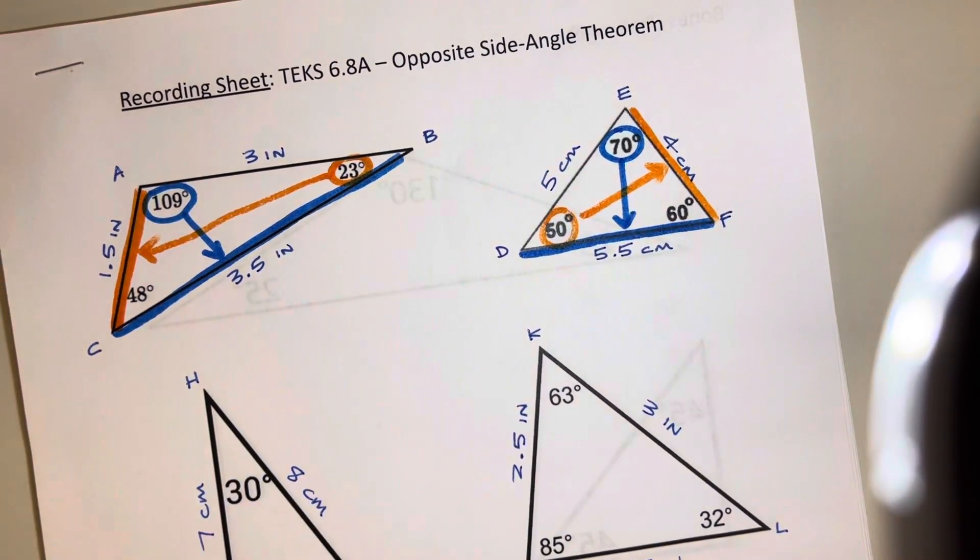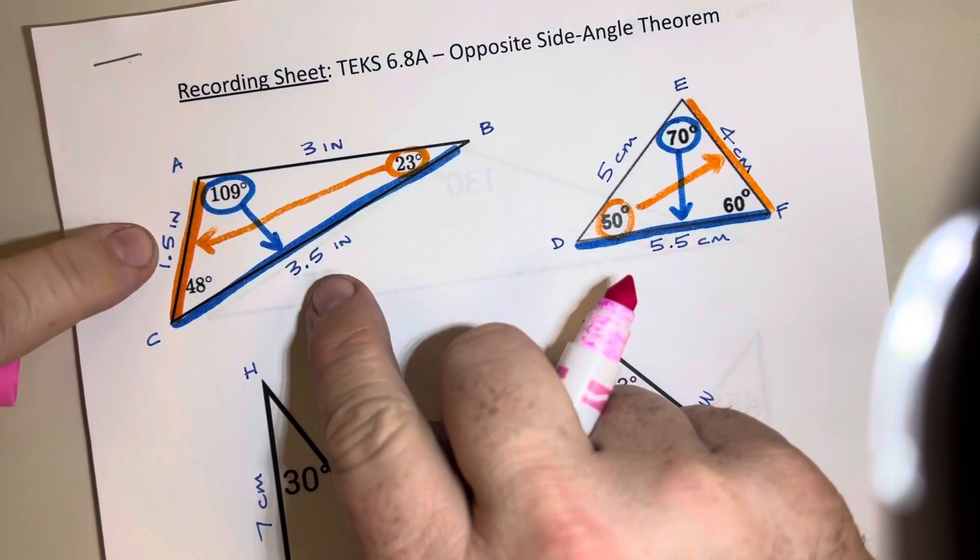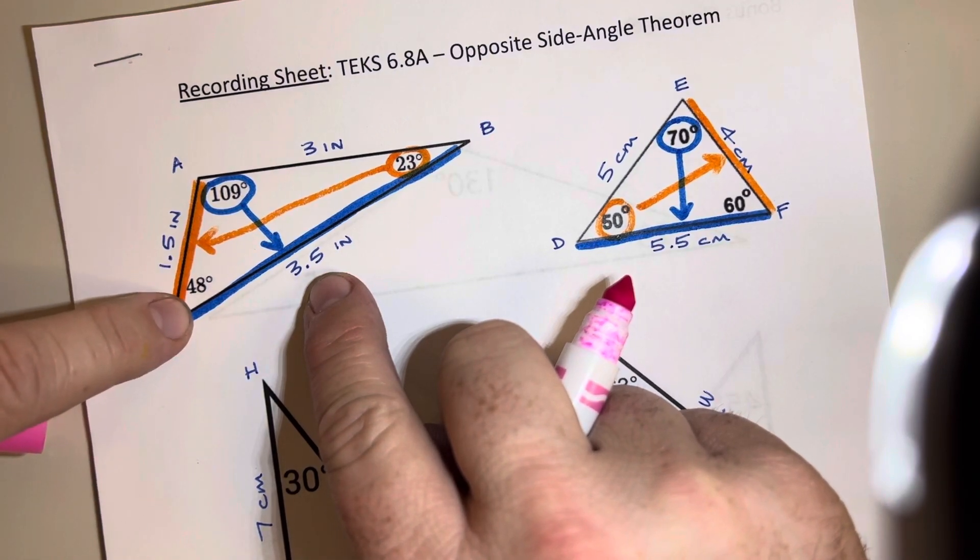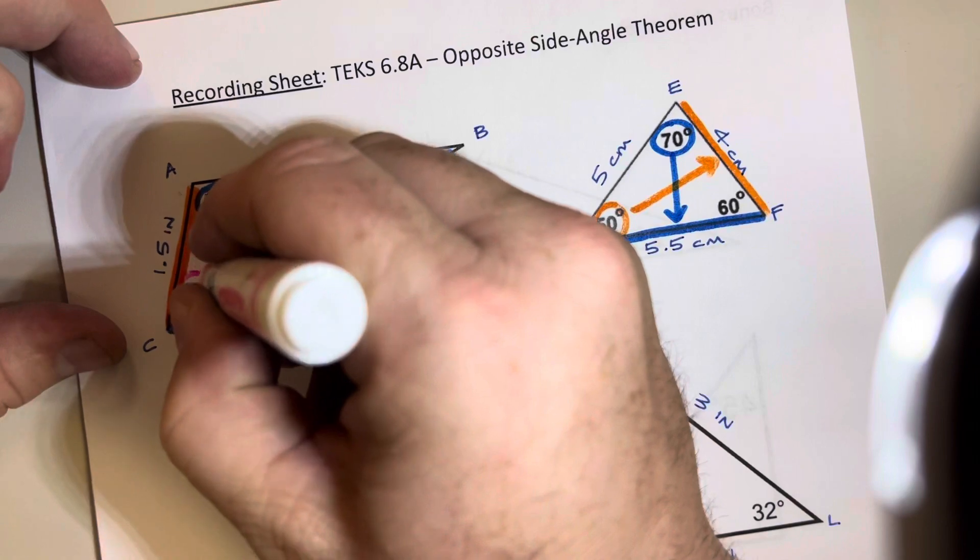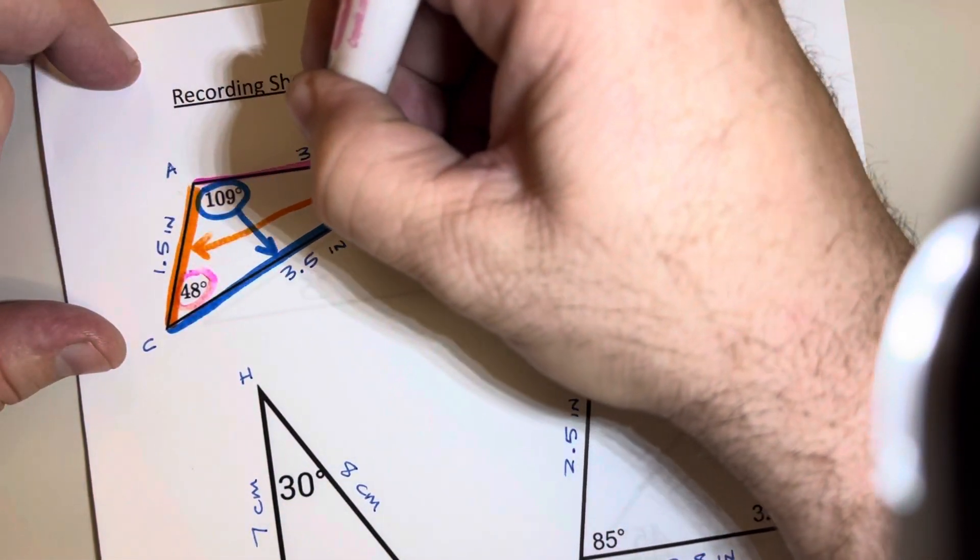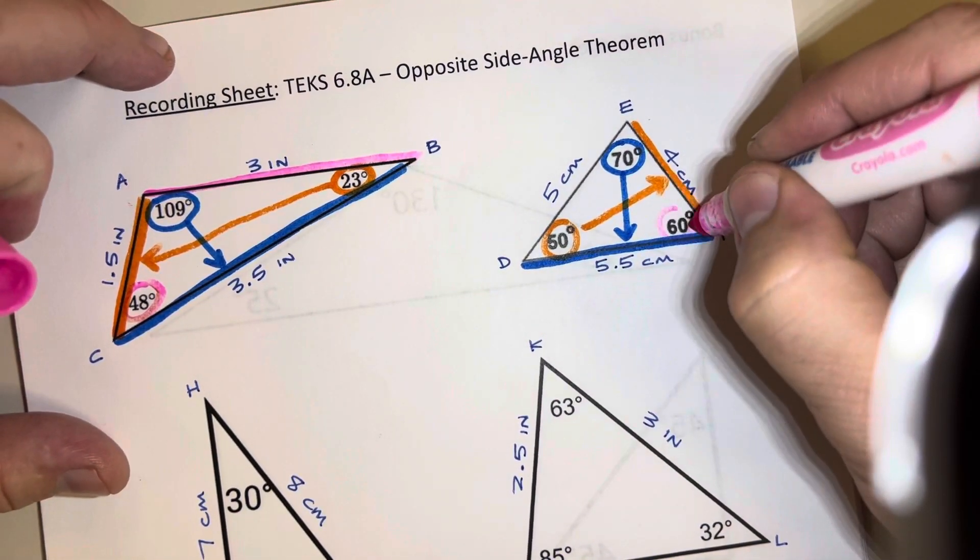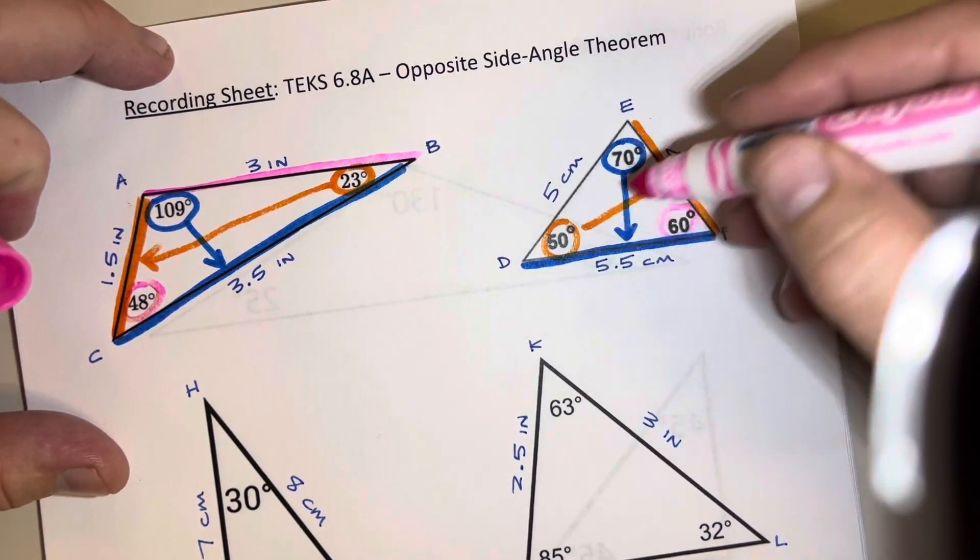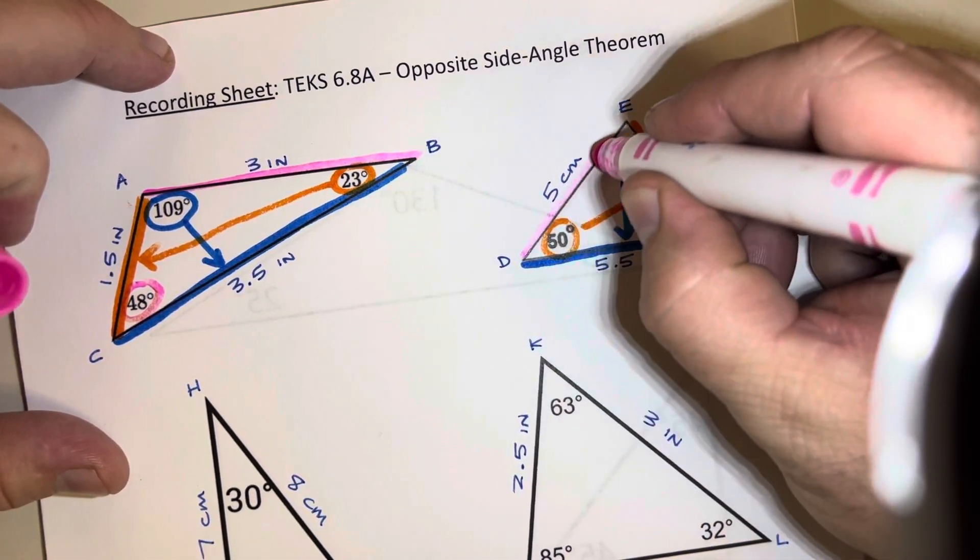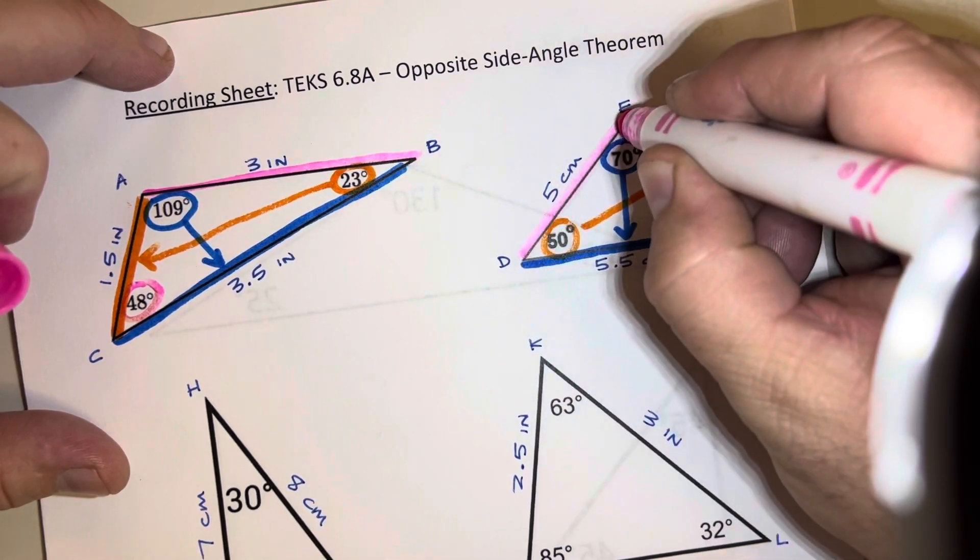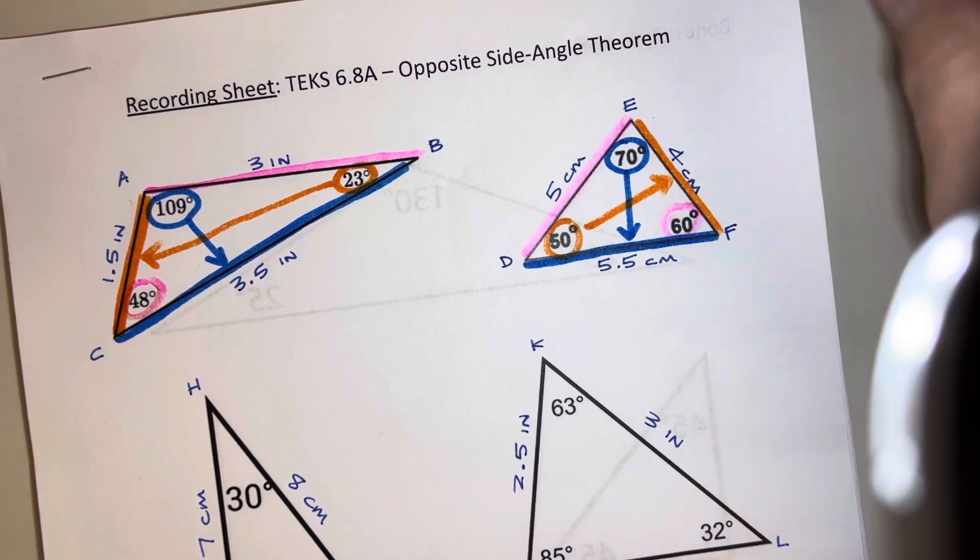And so you kind of get the idea of how that works and that leaves the middle length. So 3 is in between 1.5 and 3.5 and 48 is somewhere between 23 degrees and 109 degrees. So the middle angle is across from the middle length side in every triangle as well. And so that would be the same over here. 60 would be in between 70 and 50 and 5 centimeters would be in between 4 and 5 and a half centimeters. So the color coding kind of helped us learn and see that rule.